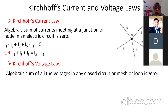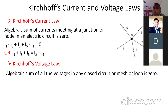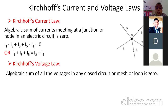Kirchhoff's current law is for a particular node or junction, while Kirchhoff's voltage law is for a closed circuit, closed path, or closed mesh. KVL states that the algebraic sum of voltages across all components and sources around a particular closed path or mesh is equal to zero. In mesh analysis, sign conventions are very important because there may be a rise or fall in potential.